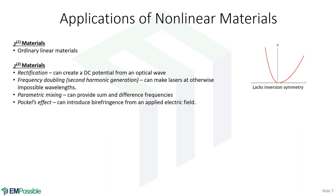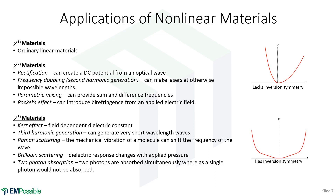There's also the Pockels effect, where birefringence is introduced by an applied electric field. For χ3 — which is symmetric but still nonlinear — a very interesting effect is the Kerr effect, where the dielectric constant or refractive index depends on intensity. This leads to self-focusing: a beam shining into a nonlinear medium is brightest in the middle, which increases the refractive index there, creating an induced lens function that focuses the beam further, amplifying itself — you can actually blow materials up this way.